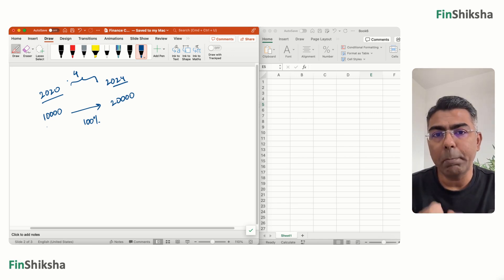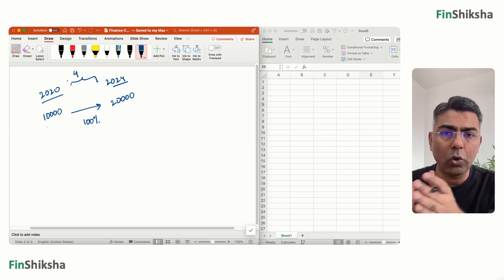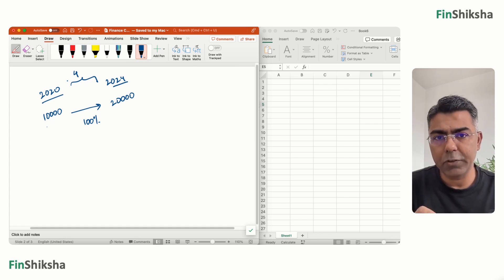Now if this was simple interest or a concept of simple growth where the principle is intact and you're only growing on that principle, remember the concept of simple interest, then this is fine. If we're growing 10,000 rupees at 25% and assuming simple interest, then 25% is the correct answer. But here we are assuming compounding, Compounded Annualized Growth Rate.